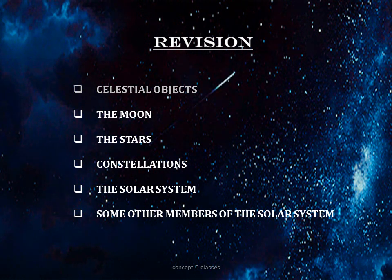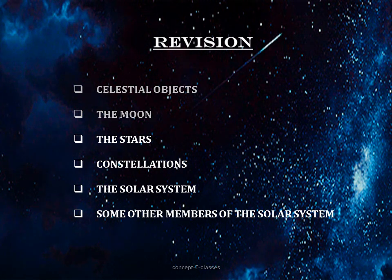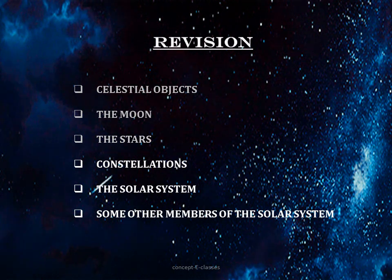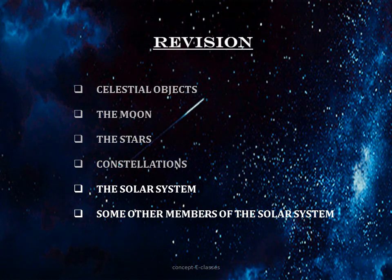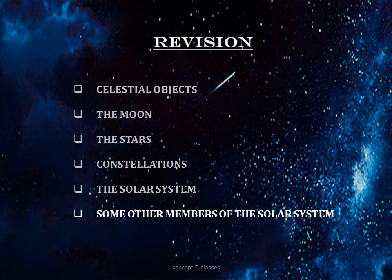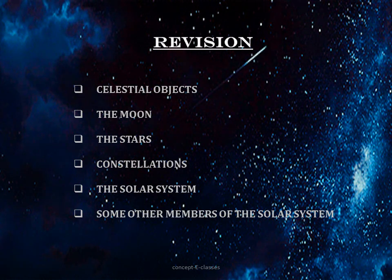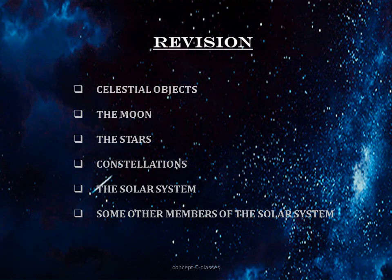First we saw what are celestial objects and we learned about some of these objects like the moon. In the topic moon, we studied about the phases of the moon and about the surface of the moon. Then we studied about stars and then constellations, and briefly understood about four major constellations: the Big Dipper, the Orion, the Cassiopeia and Leo Major. Then we dealt about the solar system, about the sun and the planets and some other members like asteroids, comets, meteorites and artificial satellites.